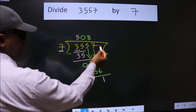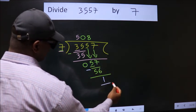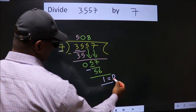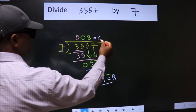No more numbers to bring it down. So, we stop here. This is our remainder. This is our quotient.